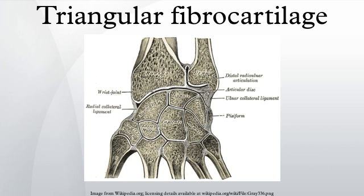The TFCC is important in load transmission across the ulnar aspect of the wrist. It transmits and absorbs compressive forces. The ulnar variance influences the amount of load transmitted through the distal ulna, and load transmission is directly proportional to this ulnar variance. In neutral ulnar variance, approximately 20% of the load is transmitted.